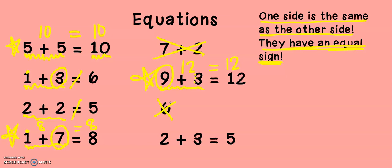And the last one. Two plus three equals five. We have the equal sign. That's good. Let's check both sides. Three, four, five. Five is equal to five. That looks great, second grade. Remember, in an equation, both sides are the same. They also have an equal sign.